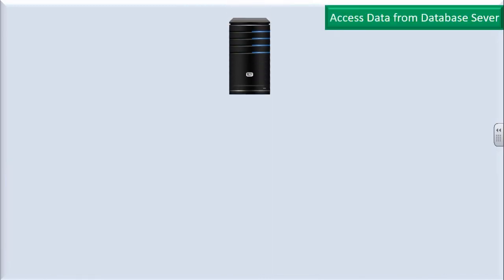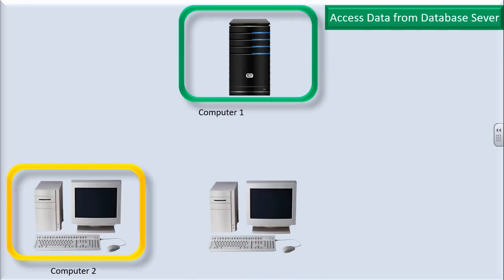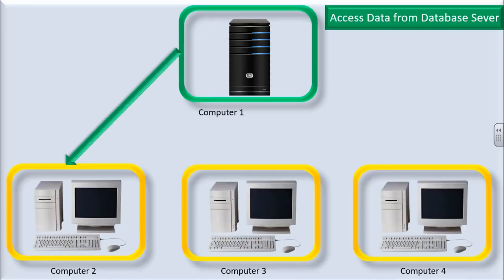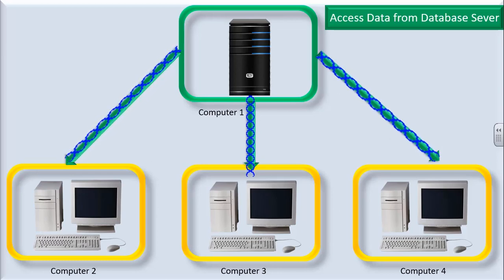When computers are connected to each other — in other words, they are networked — they can have access to data from the database server. Computer 2 makes a request to the server to supply some information, then the server provides the desired information to computers 2, 3, and 4. This is a case of accessing data from the database server, and it is possible only when there is a network.